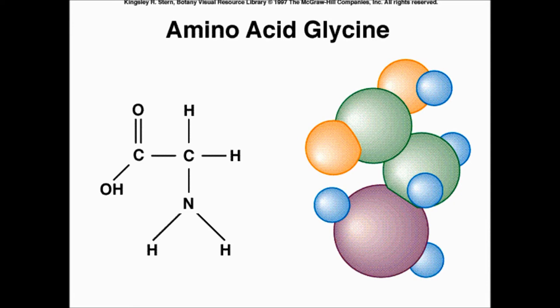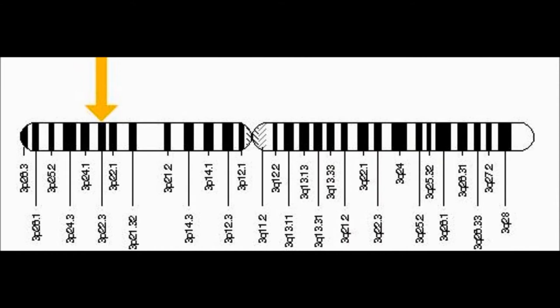Substitutions take place when the amino acid sequence is altered, usually replacing glycine with a different amino acid. This changes the ends of these chains, resulting in the improper assembly of collagen molecules and creating abnormal type 1 collagen. These abnormal collagen molecules can cause serious problems throughout the body.